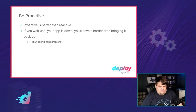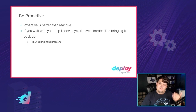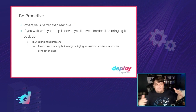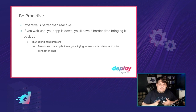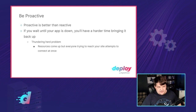You have to worry about the thundering herd problem, which is basically: your app goes down, all these people are trying to access your application or website, and now you've brought it back up — but only one web server came back up, and now everybody is funneled into that. It becomes this massive mess where all the people trying to access your app immediately run into the wall that is your app, and it comes back down because you weren't able to come up fast enough. Being proactive instead of reactive is always the better idea.